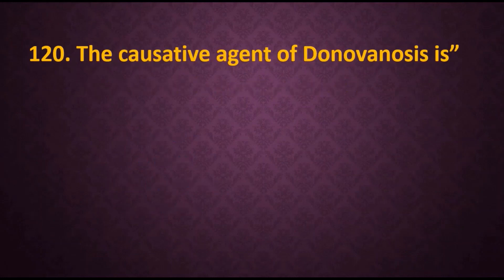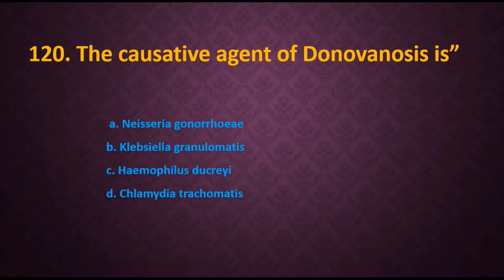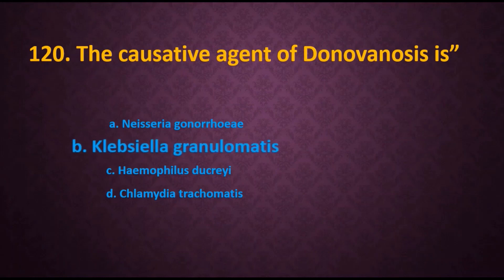Question 120: The causative agent of donovanosis is — options are: A) Neisseria gonorrhoeae, B) Klebsiella granulomatis, C) Haemophilus ducreyi, D) Chlamydia trachomatis. The answer is Klebsiella granulomatis. This concludes series 6; in series 7 we will cover questions 121 to 140. Thank you.